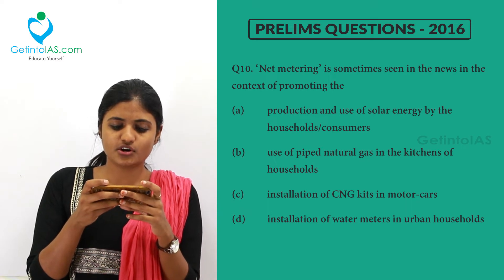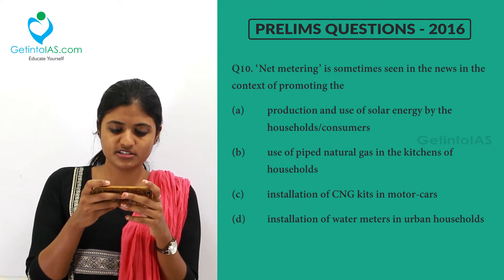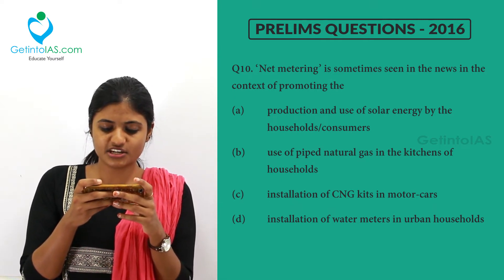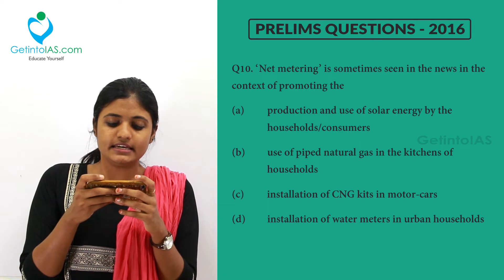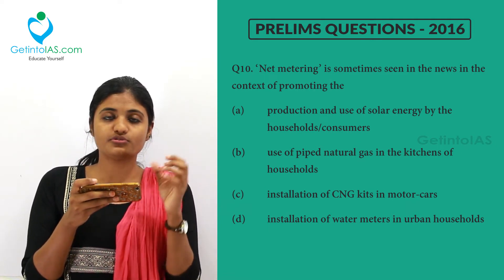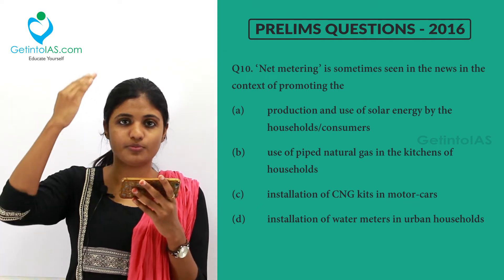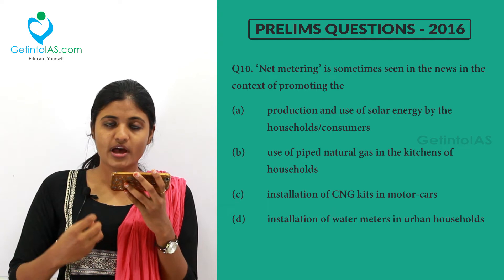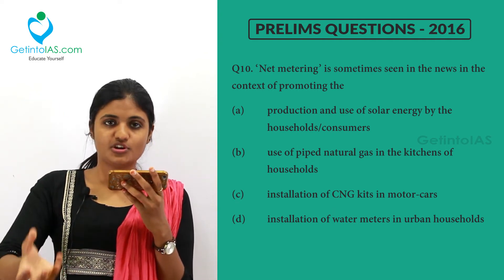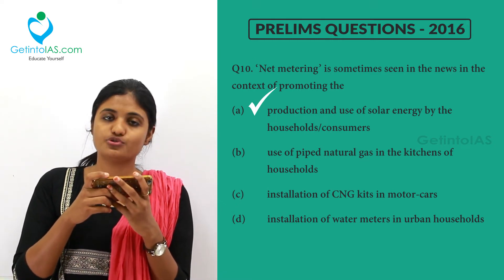Net metering is seen in the context of producing and using solar energy by household consumers. For example, you can purchase solar grids and place them on top of your house to produce electricity. You can use that electricity yourself and sell surplus electricity to the distribution companies — that is called net metering. So option A is the correct answer.